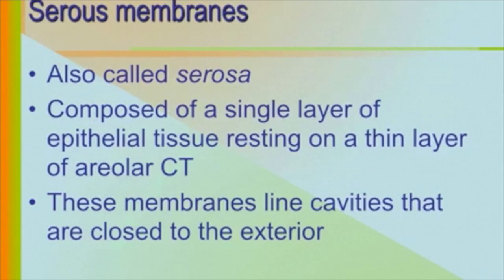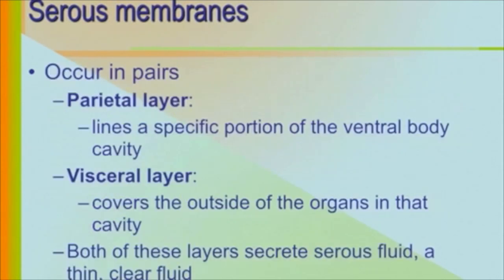Serous membranes are also called serosa. These are composed of a single layer of epithelial tissue resting on a thin layer of areolar connective tissue. They line cavities closed to the exterior. They occur in pairs: the parietal layer, which lines the inside of the body cavity, and the visceral layer, which directly covers the organ.